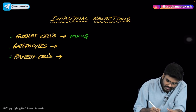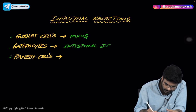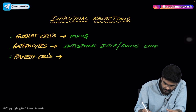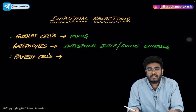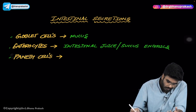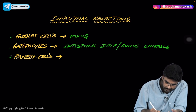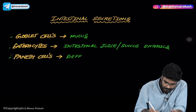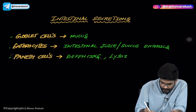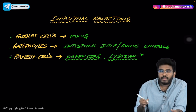Enterocytes are the ones which produce intestinal juice, or succus entericus, which contains a lot of digestive enzymes for protein digestion, lipid digestion, and carbohydrate digestion. Paneth cells are present in the deep of the crypts of Lieberkühn and are associated with the production of defensins and lysozyme. These are chemicals which protect the body from microbial organisms.